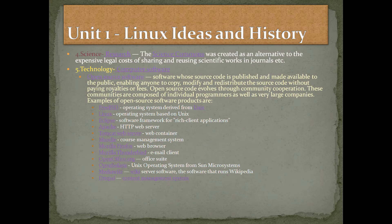The fourth area is science research. The Science Commons was created as an alternative to the expensive legal costs of sharing and reusing scientific works in journals. That is self-explanatory. And finally, technology and computer software — open source software, which doesn't need much introduction. Software that is sold.